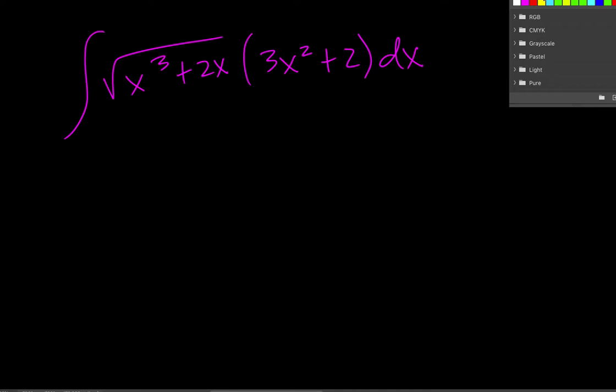They want us to integrate x cubed plus 2x under a square root and 3x squared plus 2x dx. Now when we're doing things like this, we want to try to figure out which one is a derivative of the other one. If we look at this inside piece, we see that if we took the derivative of that inside, we would get this piece. So that's going to be a key to how we do this.